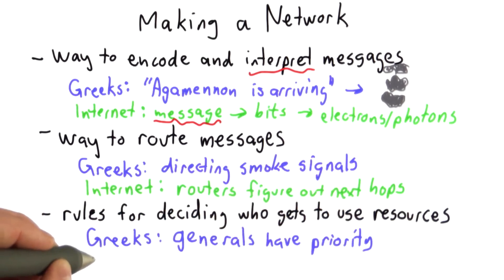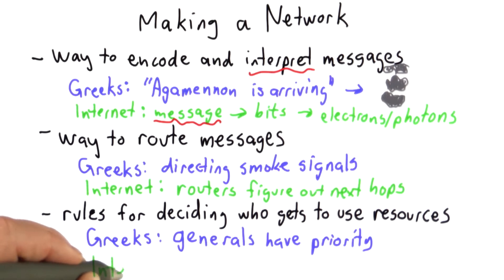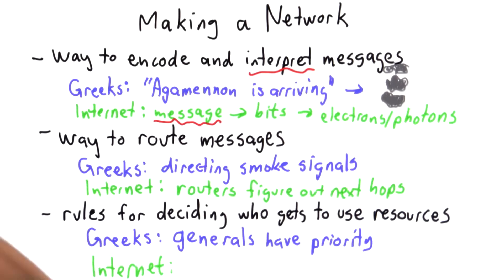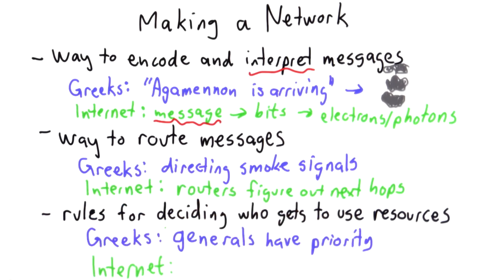Finally, you need ways to decide who gets resources. On our Greek network, we assumed that the general could decide. The Internet is much more of a wild west than that. On the Internet, there aren't any real rules for who gets resources — everywhere along the network gets to decide on its own how to do that.